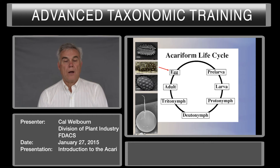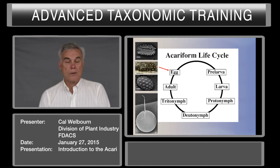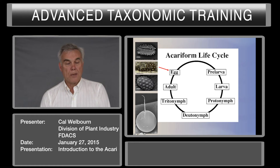Eggs — we're still learning a lot about eggs. We're finding that some eggs can actually be used to identify prostigmata mites. Here we have a bdellid egg. These are erythraeidae eggs. This is the egg of Polyphagotarsonemus latus, characteristic of this particular species. And this is the spider mite egg with the stipe.